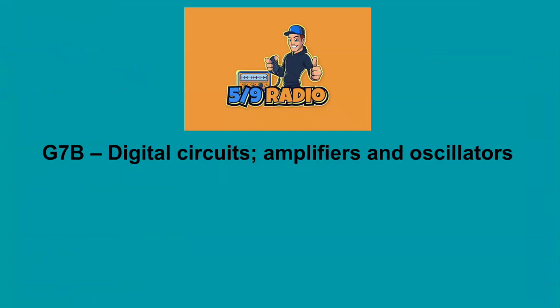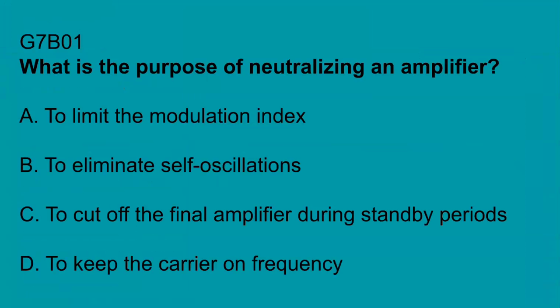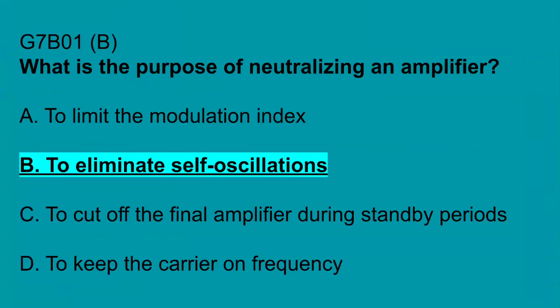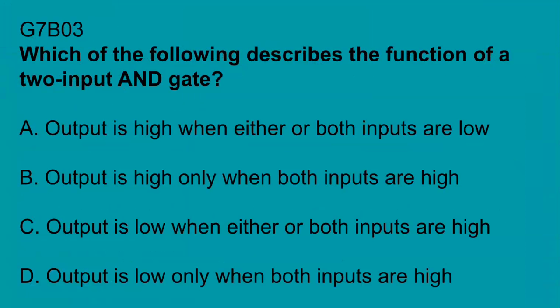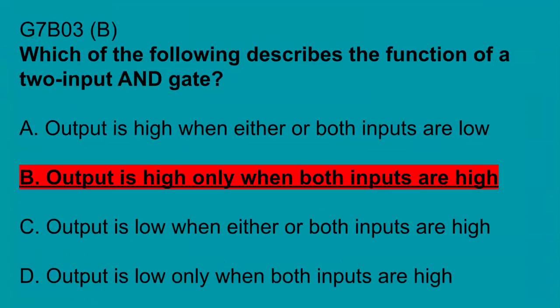G7B covers digital circuits, amplifiers, and oscillators. G7B01, what is the purpose of neutralizing an amplifier? To eliminate self-oscillations. G7B02, which of these classes of amplifiers has the highest efficiency? Class C. G7B03, which of the following describes the function of a two-input AND gate? Output is high only when both inputs are high.